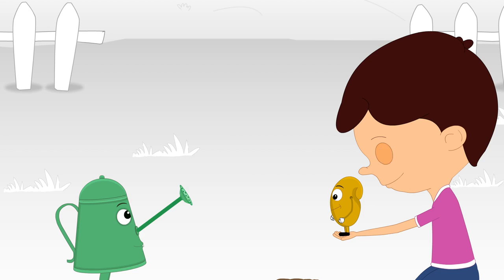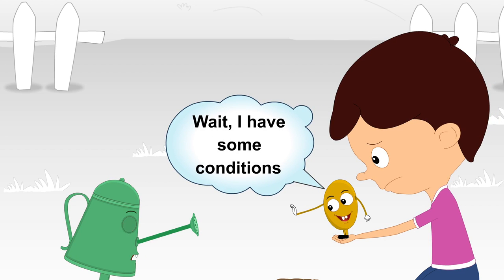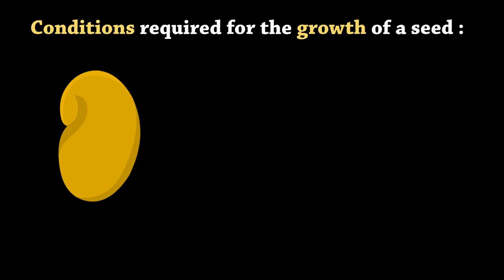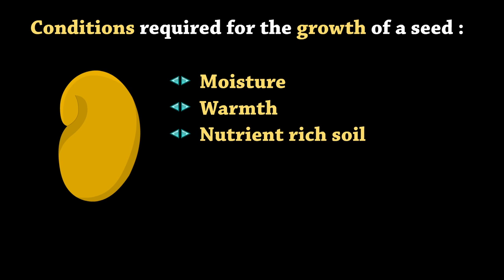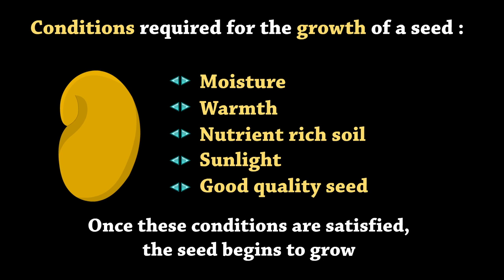Let's sow the seed. Wait, I have some conditions. Conditions required for the growth of a seed are moisture, warmth, nutrient-rich soil, sunlight, and good quality seed. Once these conditions are satisfied, the seed begins to grow.